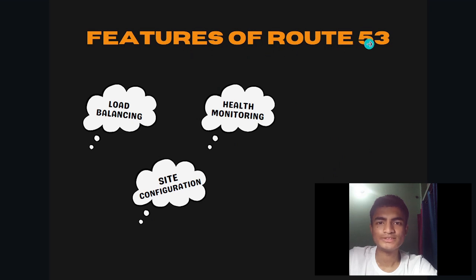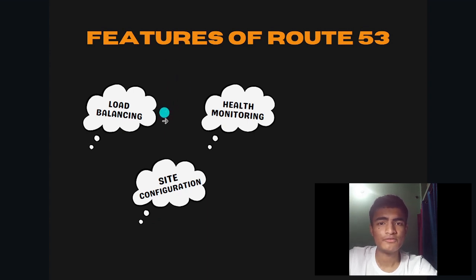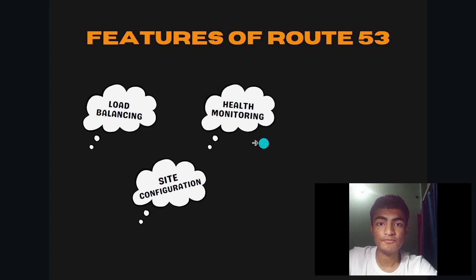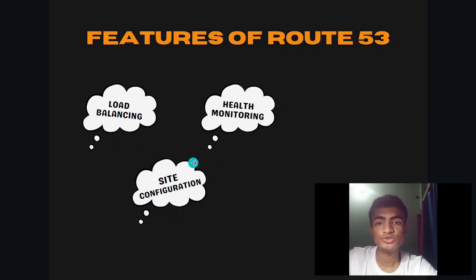The features of AWS Route 53. First of all, load balancing — it can help you find the fastest and closest website for you based on where you are and how busy the internet is. Another is health monitoring — it can check if your website is working well, and if it's not, it can send your visitors to another website that is working. The last one is site configuration — it can help you change your website settings easily with simple tools and pictures.